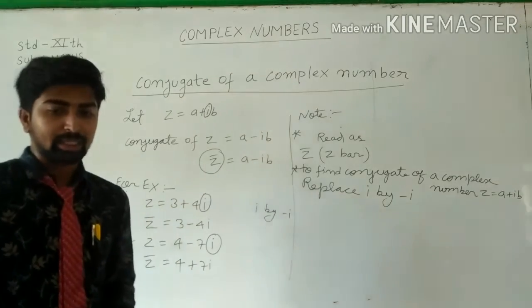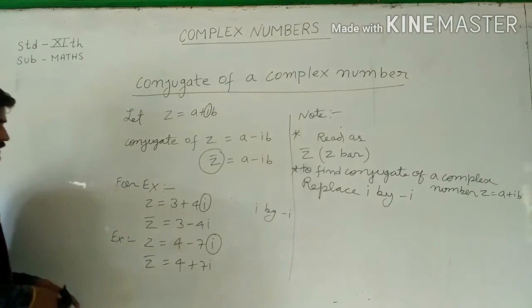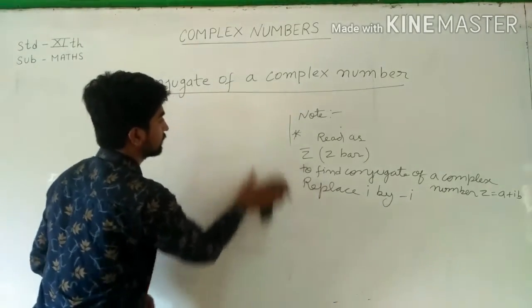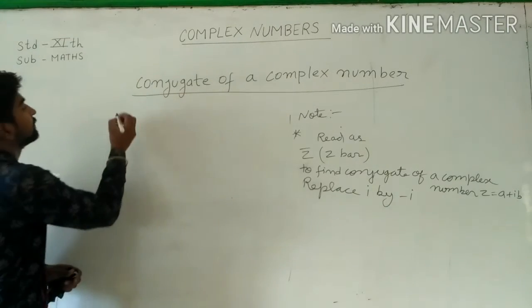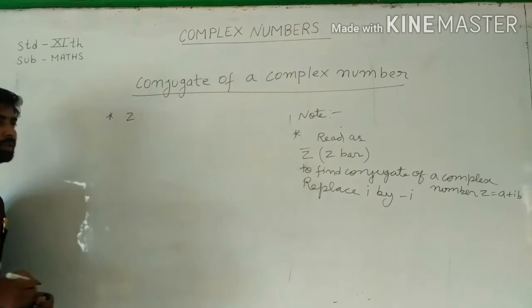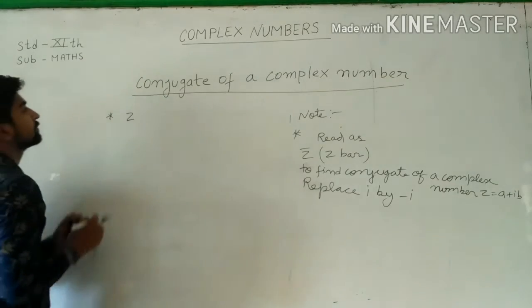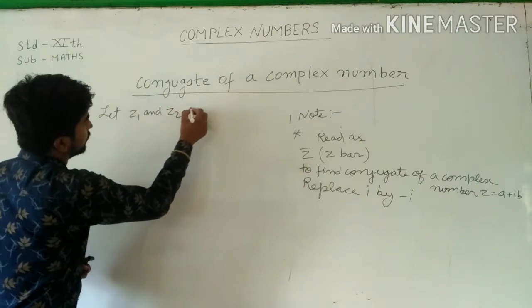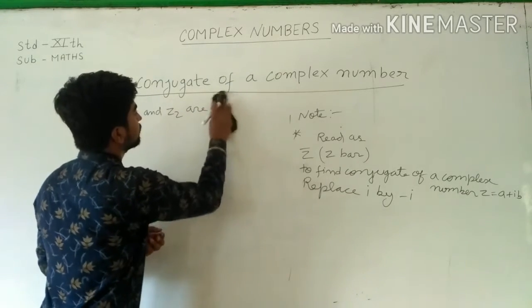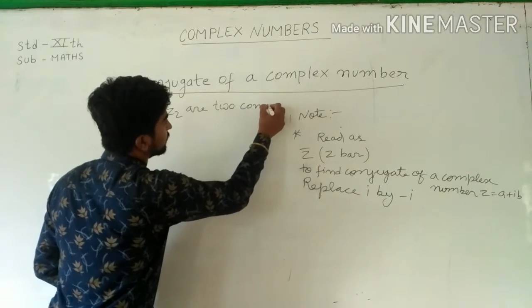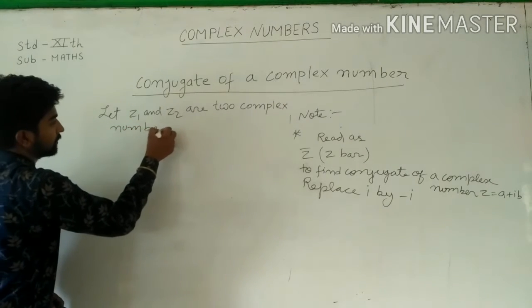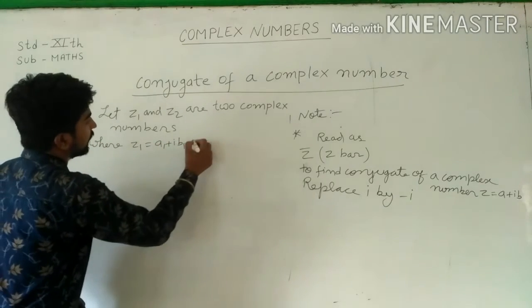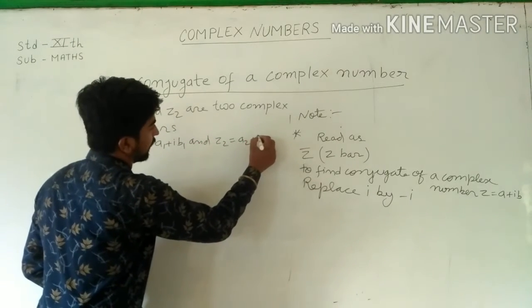Okay students, there are some properties of conjugate of complex numbers. Let us discuss some results. If Z1 and Z2 are two complex numbers, where Z1 equals A1 plus iB1, and Z2 equals A2 plus iB2.